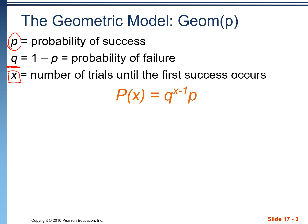Here's the equation for a geometric model. It's all of the failures that occur until we finally get to our successful outcome.